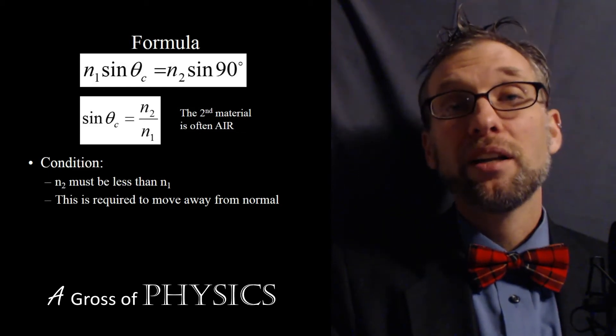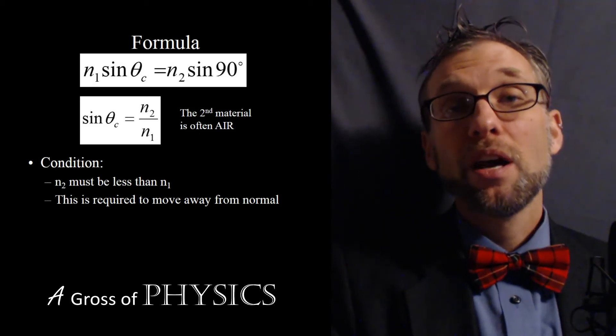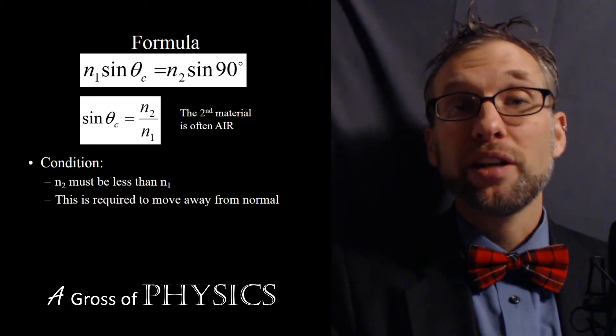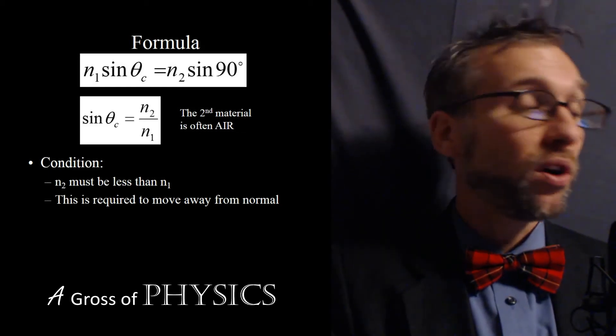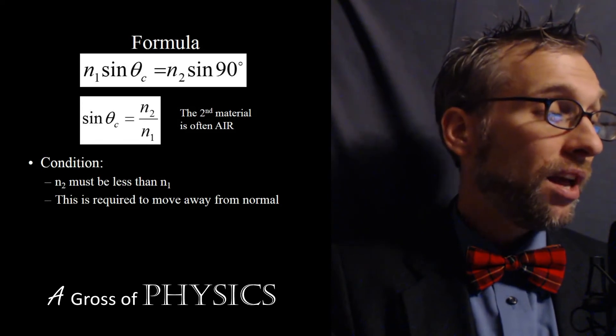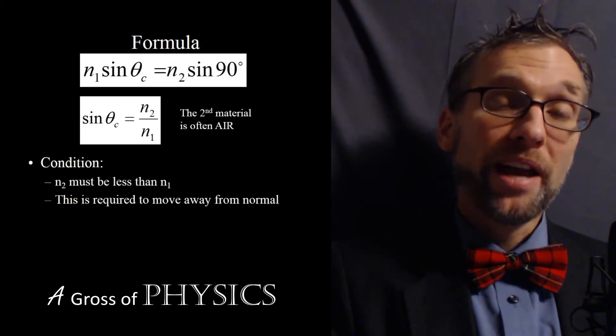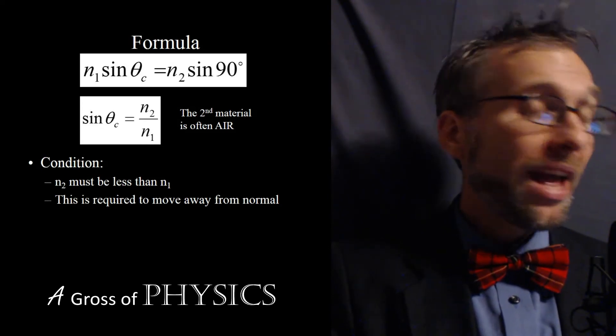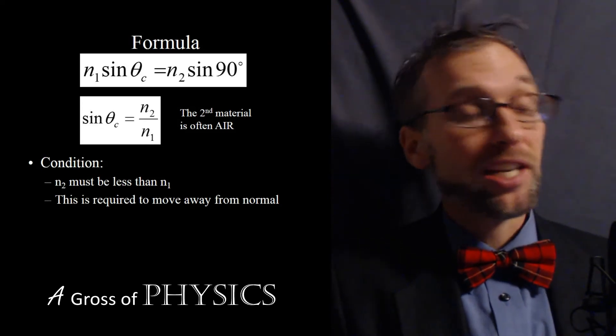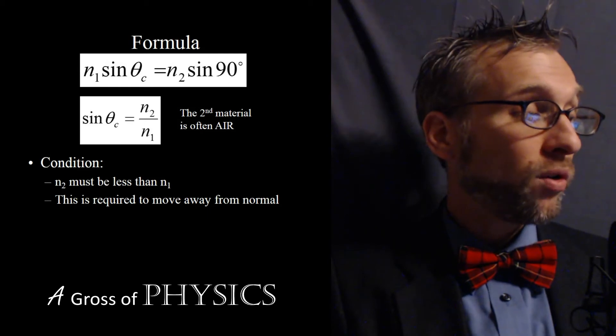So I like to use the non-modified version where sinθ2 is always 90. You'll see in a lot of textbooks the critical angle equation is sinθc = 1/N, but remember N1 has to be bigger than N2, because the light has to move away from the normal.